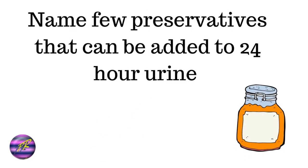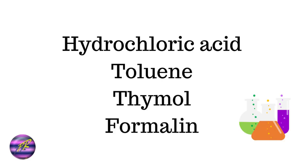Name a few preservatives that can be added to 24-hour urine. The preservatives which can be added are hydrochloric acid, toluene, and thymol. Formalin can also be added, but that will be more for preservation of the formed elements.